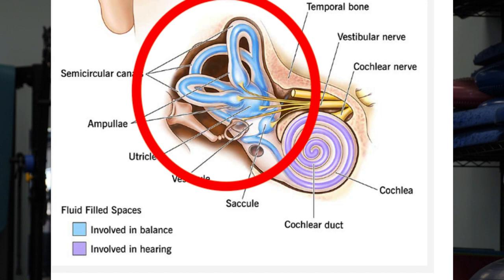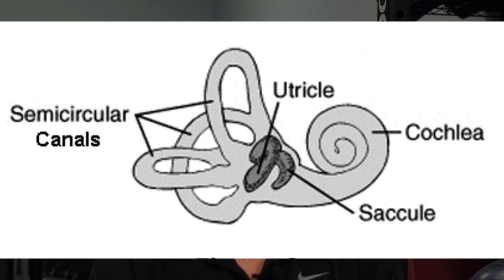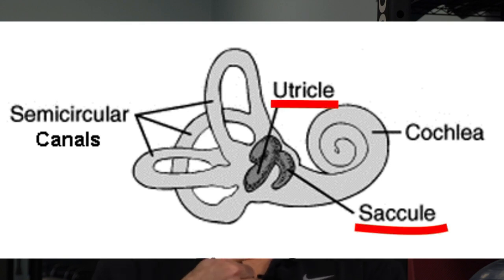There's another part of this organ called the labyrinth, and that's where balance information comes from. The center part of the labyrinth is called the vestibule. In the vestibule there are two chambers: one called the saccule and one called the utricle. The utricle is responsible for linear motion — forward and back or side to side.